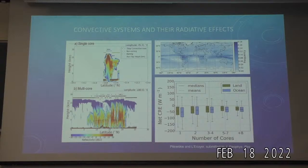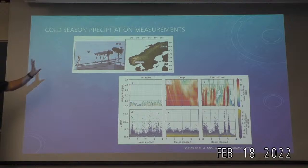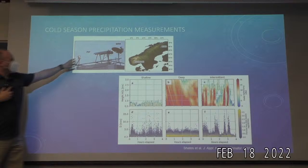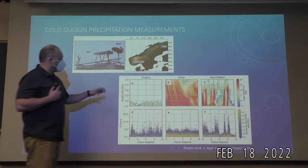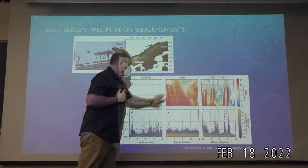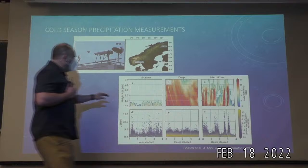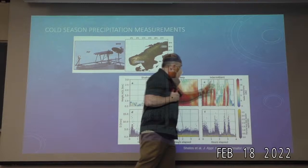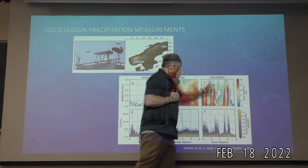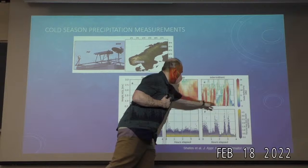I also do some fieldwork, deploying less expensive precipitation sensors — the precipitation imaging package and the micro rain radar — in locations around the globe, focusing on cold-season precipitation like snow and very light rain. PhD student Julia Shades published a paper looking at different snowfall regimes in Scandinavia, observed at sites in Norway and northern Sweden, classifying events as shallow, deep, or intermittent — an on-off burst regime that can produce intense snowfall for short periods.